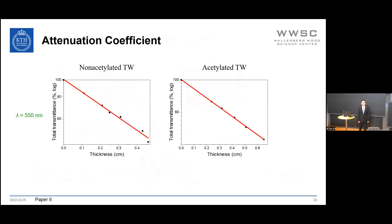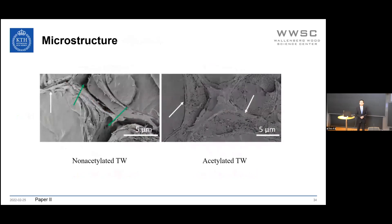The total transmittance as a function of sample thickness is fitted with this equation, and the slope corresponds to the attenuation coefficient: 1.67 cm⁻¹ for non-acetylated transparent wood and 0.64 cm⁻¹ for the acetylated version. The lower attenuation coefficient for acetylated transparent wood is due to microstructural differences—specifically, air gaps between the wood substrate and polymer are present in non-acetylated samples but absent in acetylated ones.